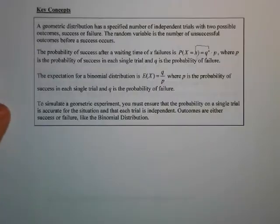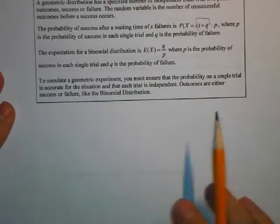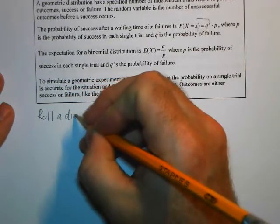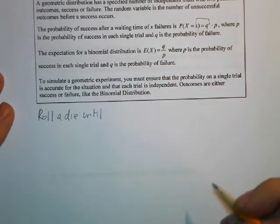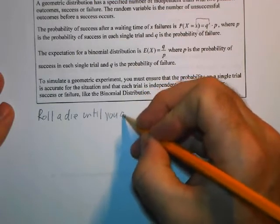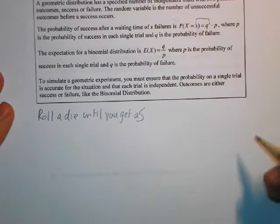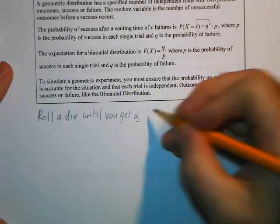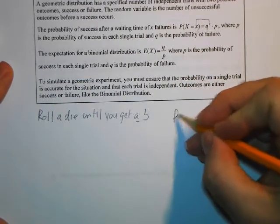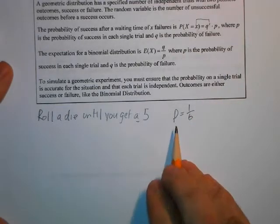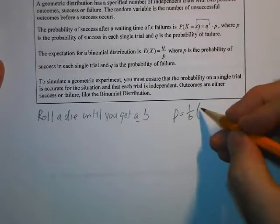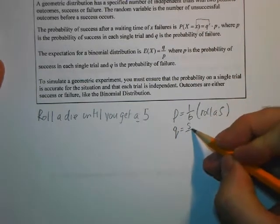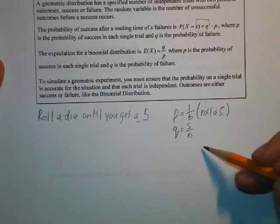Before we get to the examples, let's work through an example. Our goal is to roll a die until you get a five — you keep rolling. You might roll once, or you might have to roll a hundred times until you get a five. A success here would be rolling a five, which has a one-in-six probability. So P, the probability of success, is 1/6. Our Q will be rolling anything other than a five, which is 5/6. These two variables always add up to one.